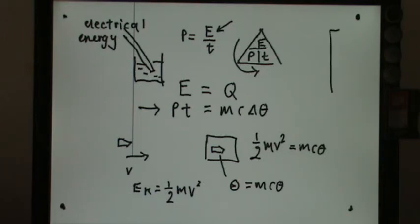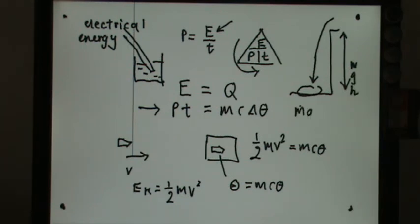if there's a waterfall here and there's a rock here. The water flows down and hits the rock. At a certain height, it has gravitational potential energy of mgh. So we can use mgh equals mc theta.